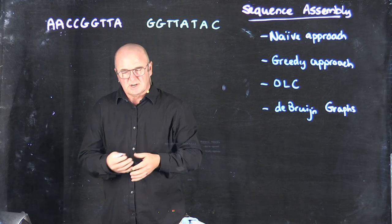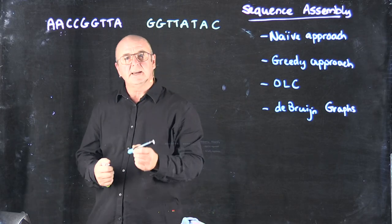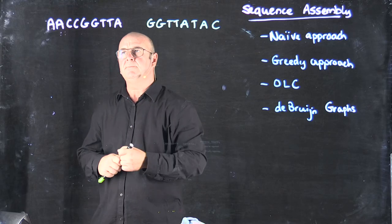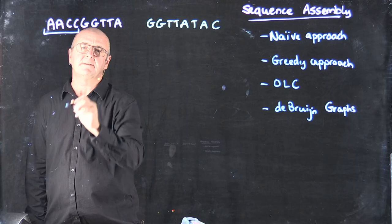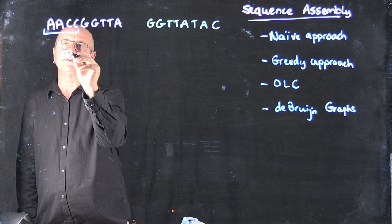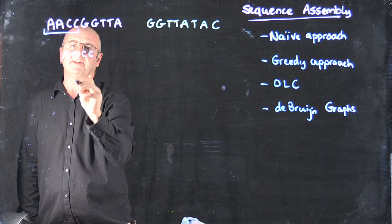The way the de Bruijn graph approach works is that we take k-mers, short k-mers, and so in this case I'm just going to use 4 as an example. So I'm going to take every possible overlapping 4-mer.